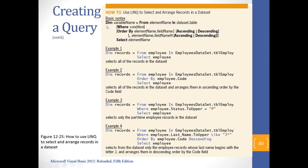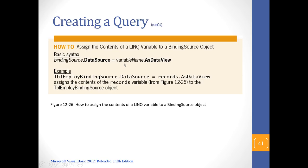Some syntax rules: ORDER BY must come after the WHERE clause — you cannot switch the order. The syntax is: FROM, then WHERE, then ORDER BY, then SELECT. You can also sort by multiple fields: first sort by employee code descending, then by last name ascending, then by salary ascending. Each subsequent sort applies within the results of the previous sort, giving you different results than sorting by a single column.